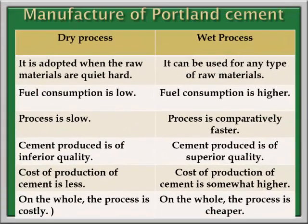This is the difference between the dry process and the wet process. Compared to the dry process, the wet process can be used for any type of raw material. Fuel consumption is higher. The process is comparatively faster, so cement produced is of superior quality. The cost of production is somewhat higher, but on the whole the process is cheaper.